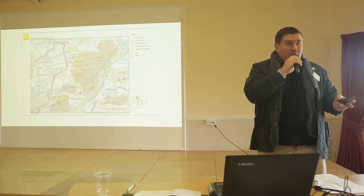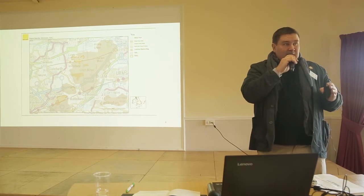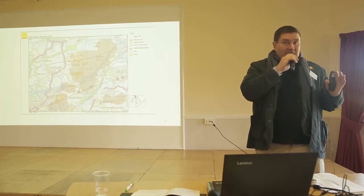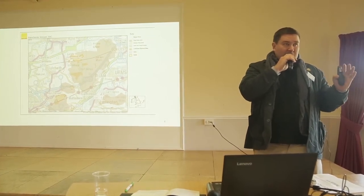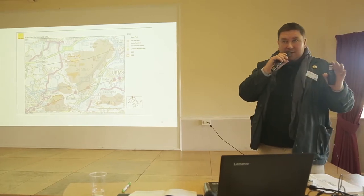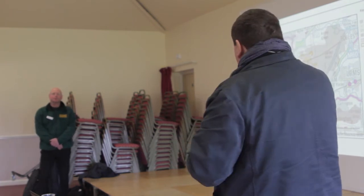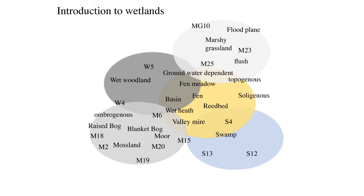Where you've got relic bog habitat is one of the few places you can restore it. If it's been destroyed, bulldozed over, limed, heavily damaged, you can't put it back. But if you've got a dried out mossland, you can restore the habitat back on those areas. So what we're really interested in is lowland raised bog.